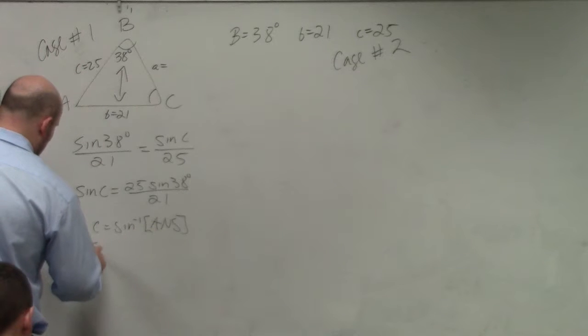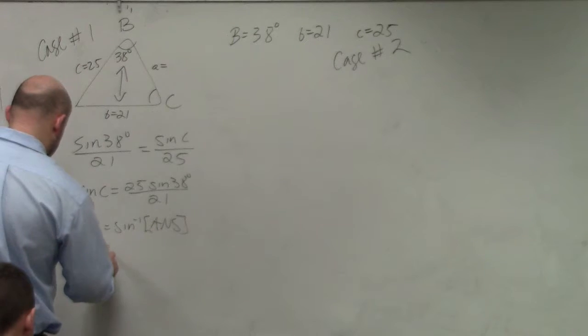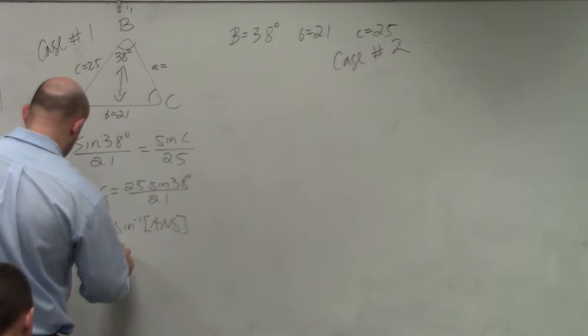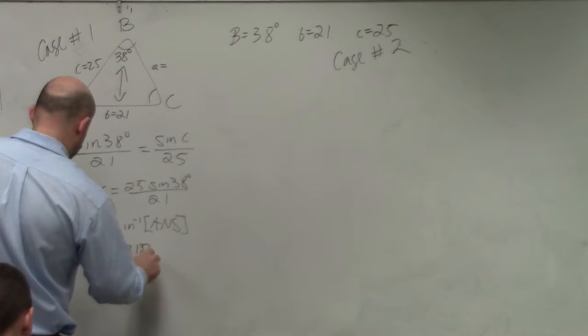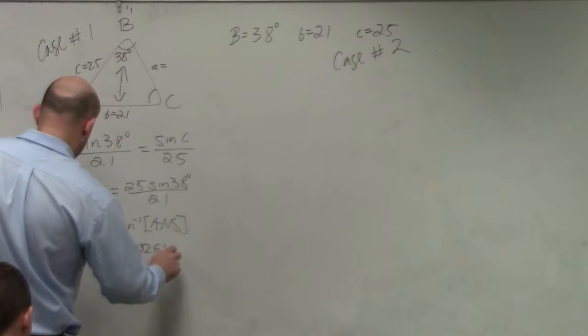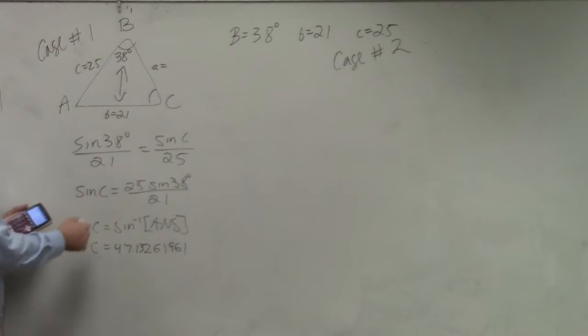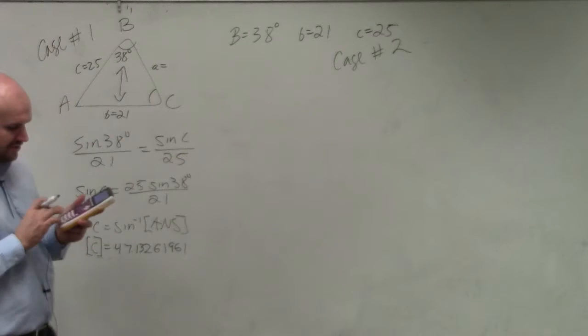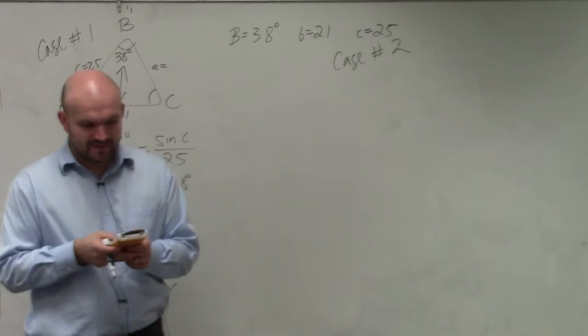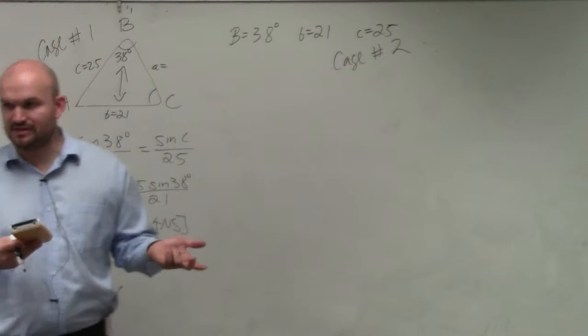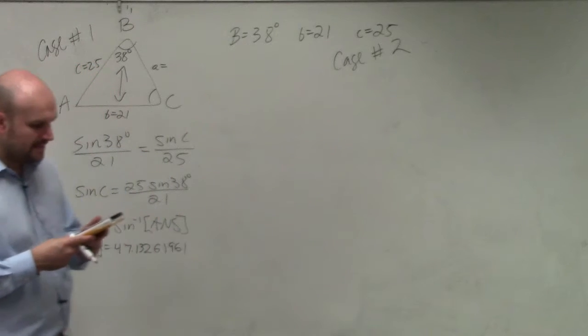So then the next thing you want to do, my answer is equal to 47.13261961. Now we're going to be using this angle again. This is c. We're going to be using this angle again. So I want to store that angle. So all you've got to do to store it is just hit store, and then I'm going to hit alpha c. Obviously, I want to store it as alpha c.